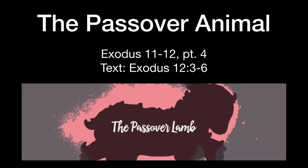Last week we looked at verses 1 through 2 in Exodus chapter 12, and we looked at the first month of the year. This week we're going to begin looking at some of the particulars in regards to the Passover animal and also in regards to the timing of the sacrifice of the Passover. So we want to begin in verses 3 through 5.